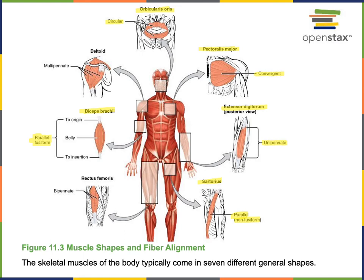A bipennate fascicle arrangement is where the fascicles are attaching obliquely on both sides of a long tendon. The rectus femoris muscle on the anterior femoral region, one of the quadriceps femoris muscles, is an example of a muscle with a bipennate fascicle arrangement. This muscle can produce a very forceful contraction to extend the tibiofemoral joint.